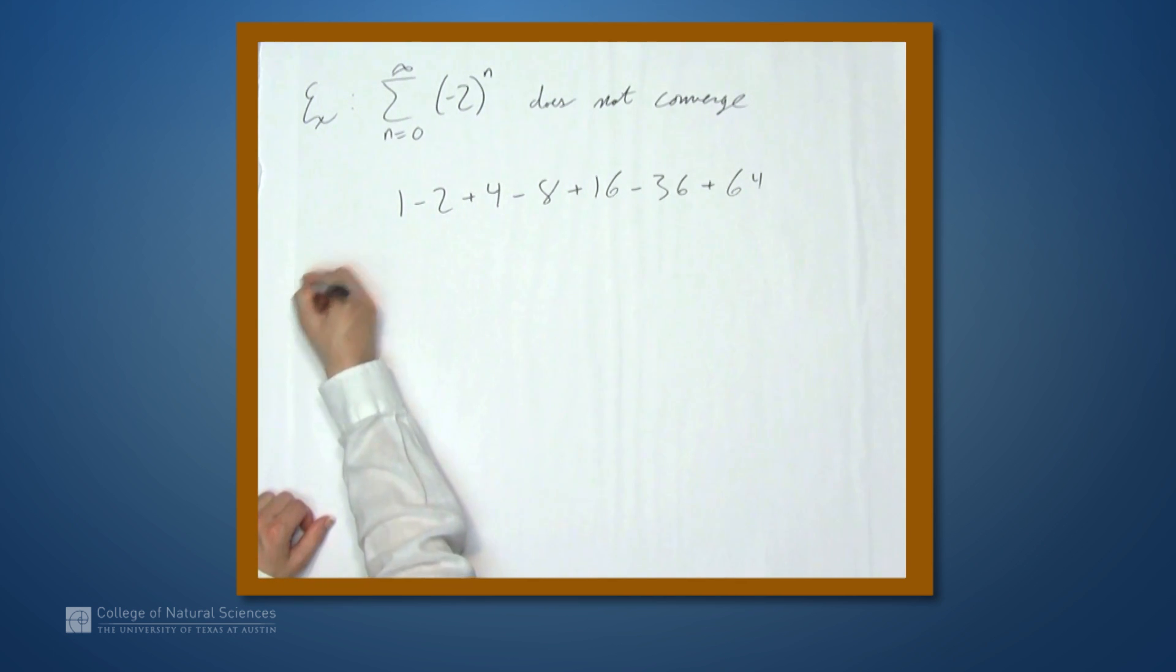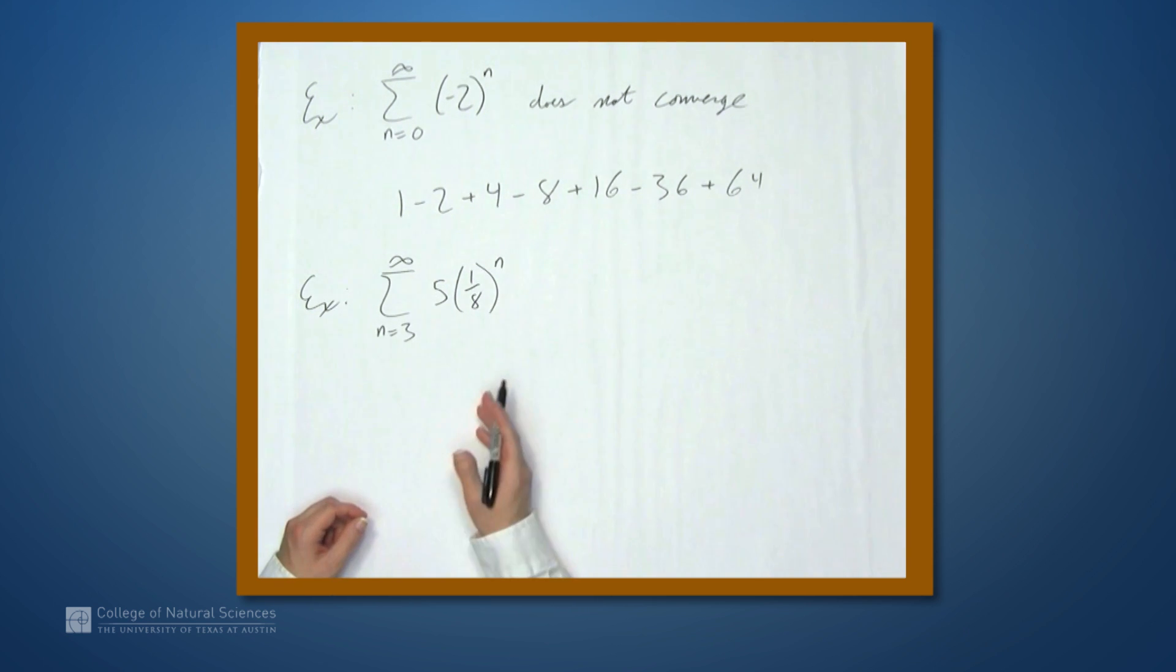Let's look at one more example. Let's look at the sum from n equals 3 to infinity of, say, 5 times 1 eighth to the n. Well, what's different here? Now we're starting at n equals 3. Should that change convergence to divergence or divergence to convergence? Well, no.